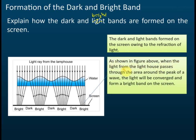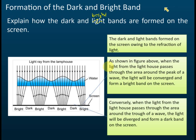As shown in the figure, when light from the light source passes through the area around the peak or crest of the wave, the light is converged. When the light converges, it produces a bright band on the screen. This explains the formation of the bright band.